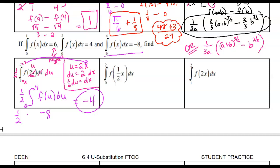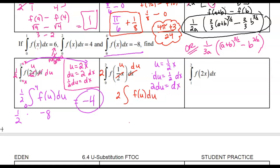Next: u = x/2, so du = 1/2 dx and dx = 2 du. Matching up: the integral becomes 2 times the integral of f(u) du. Changing limits: if x = 2, u = 1; if x = 0, u = 0. Now these are u-limits matching a u-function. The integral of f from 0 to 1 was given as 6, so 2 times 6 equals 12.